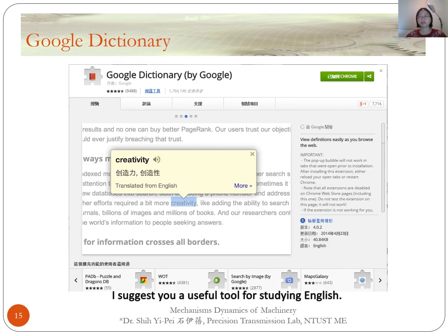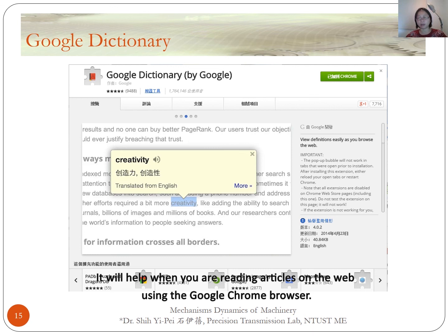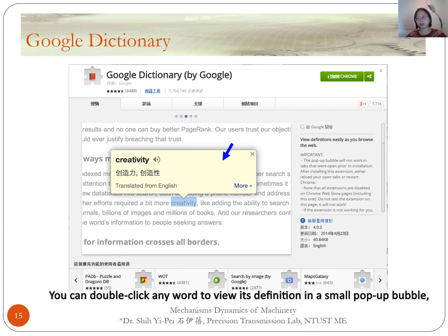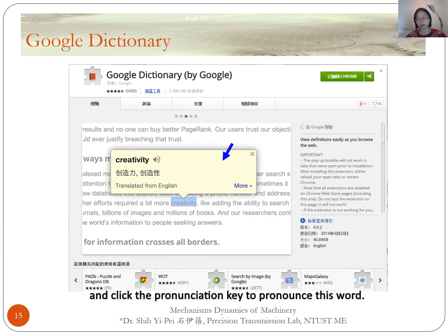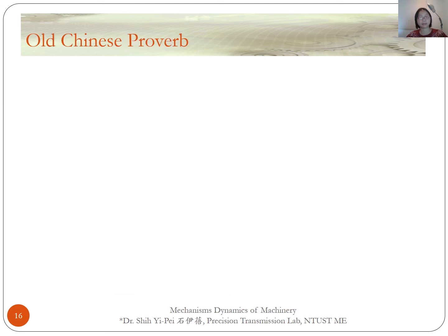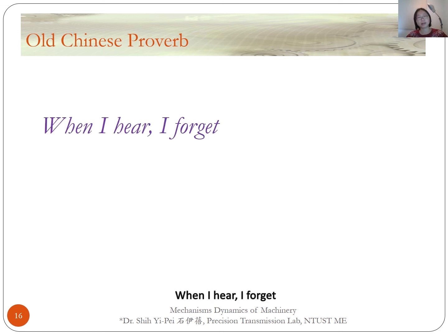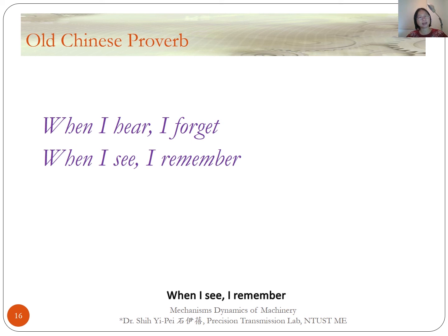I suggest a useful tool for studying in English: Google Dictionary is an online dictionary service by Google. It helps when you are reading articles on the web using the Google Chrome browser. You can double-click any word to view its definition in a small pop-up bubble, and click to hear the pronunciation of the word. I also share an old Chinese proverb: when I hear, I forget; when I see, I remember; when I do, I understand.